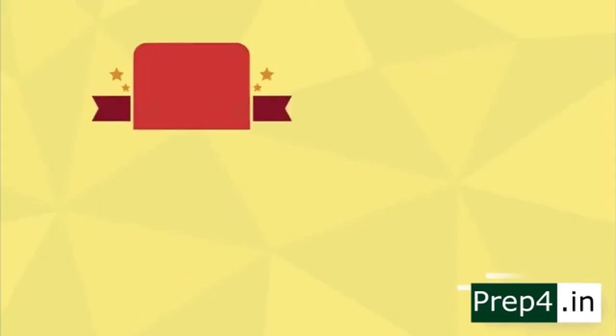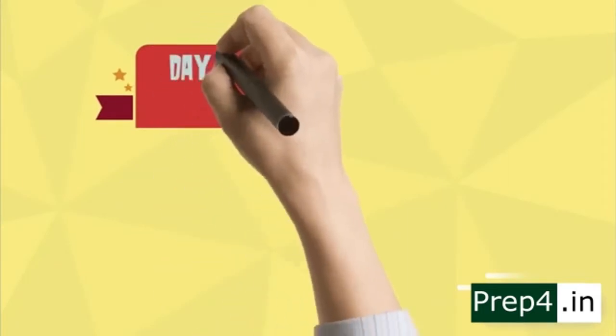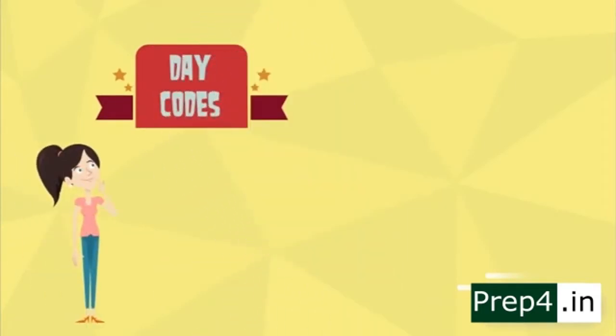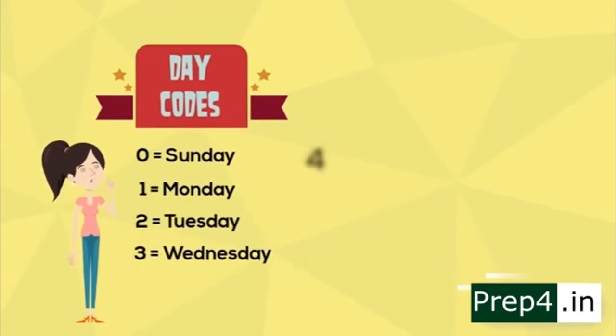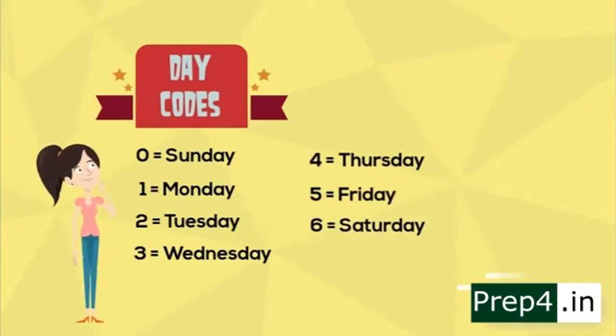Let's get started. First, make codes for the days of the week like this: 0 for Sunday, 1 for Monday, 2 for Tuesday, 3 for Wednesday, 4 for Thursday, 5 for Friday, and 6 for Saturday respectively.